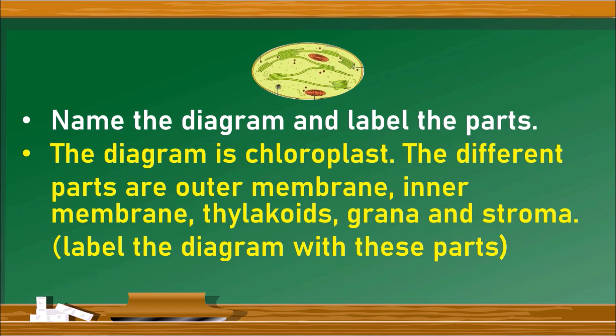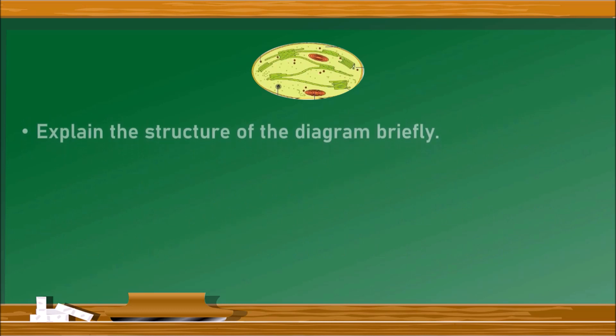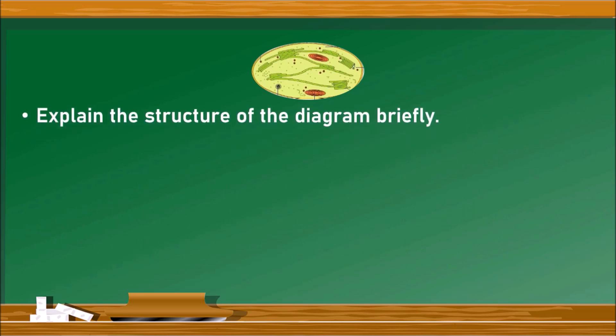Sometimes parts are indicated with letters — for example, outer membrane may be indicated as X, inner membrane as Y, and grana as Z — and we will have to write: X is outer membrane, and so on. The next question is: explain the structure of this diagram briefly.